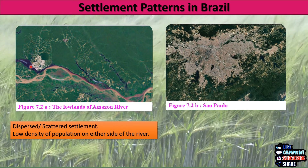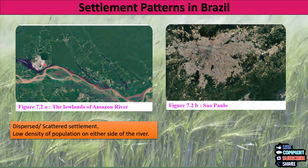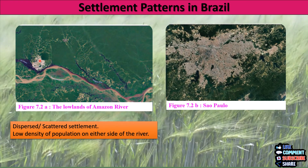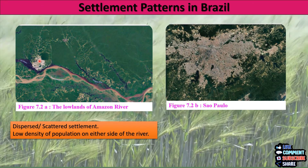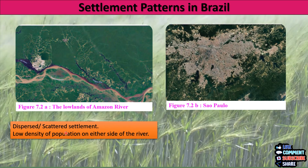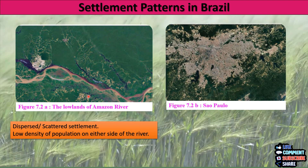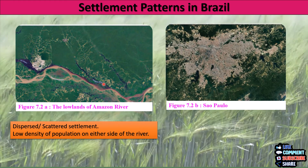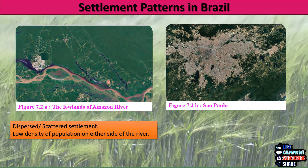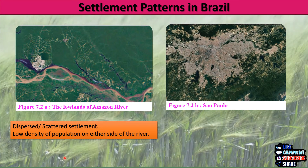Now if you remember, this is Manaus — the city of Manaus — which is highly populated. The settlement on either side of the river is a scattered type of settlement, and since it is scattered, the density of population is low.